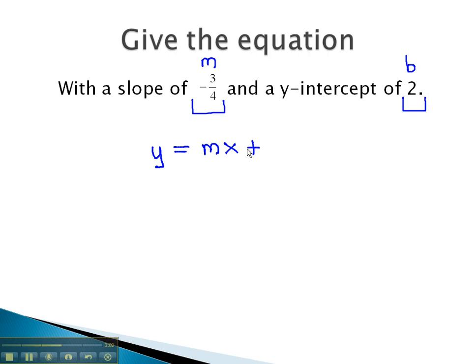We also know the equation now, y equals mx plus b will represent any line. Plugging in what we know, we get y is equal to m, or the slope, negative 3 fourths, x plus b, which is 2. This is the equation of the line that will have a slope of negative 3 fourths and a y-intercept of 2.